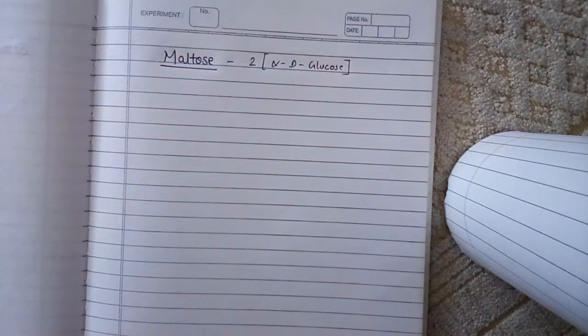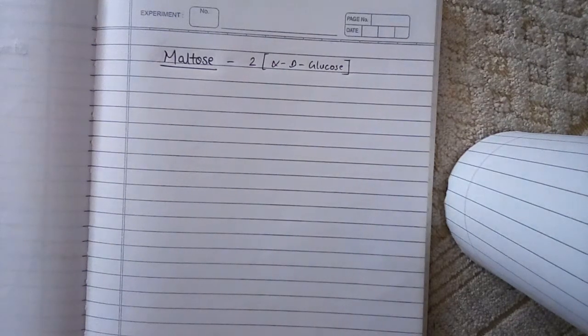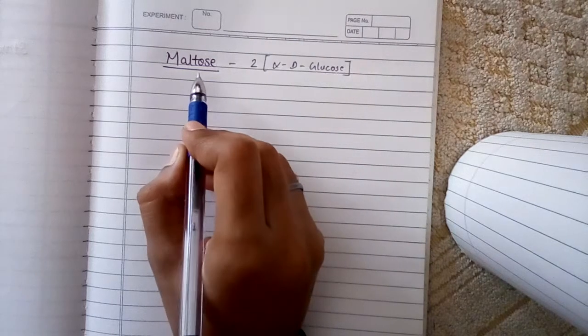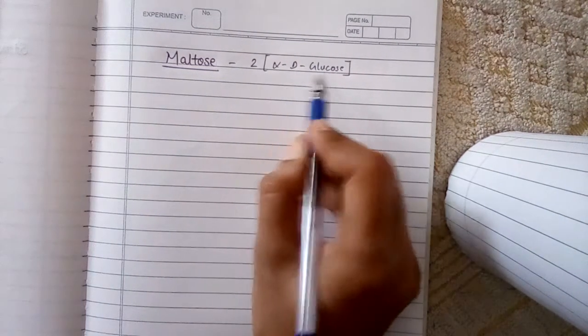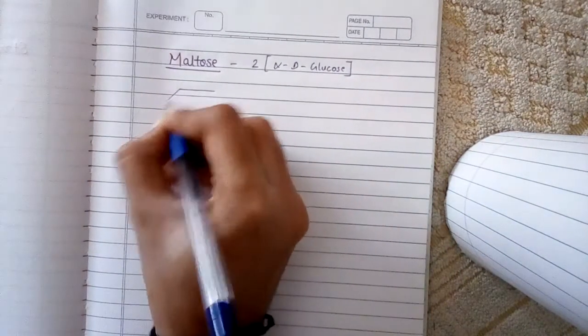Hello guys, from my earlier videos you would be aware about how to make alpha and beta D-glucose. Basically we have come across how to make it from Newman structure to the cyclic structures. So now we are at maltose.